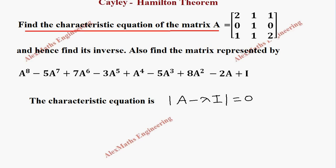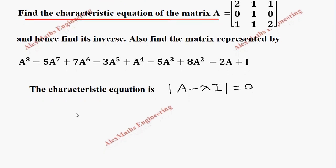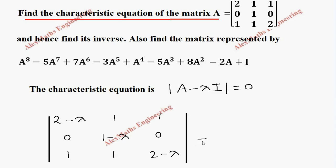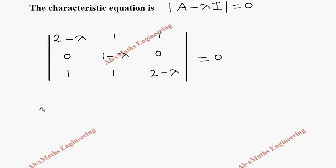Now the elements will be: 2 minus lambda, 1, 1; 0, 1 minus lambda, 0; 1, 1, 2 minus lambda. And this determinant value equals 0. We are going to expand this along row 1.